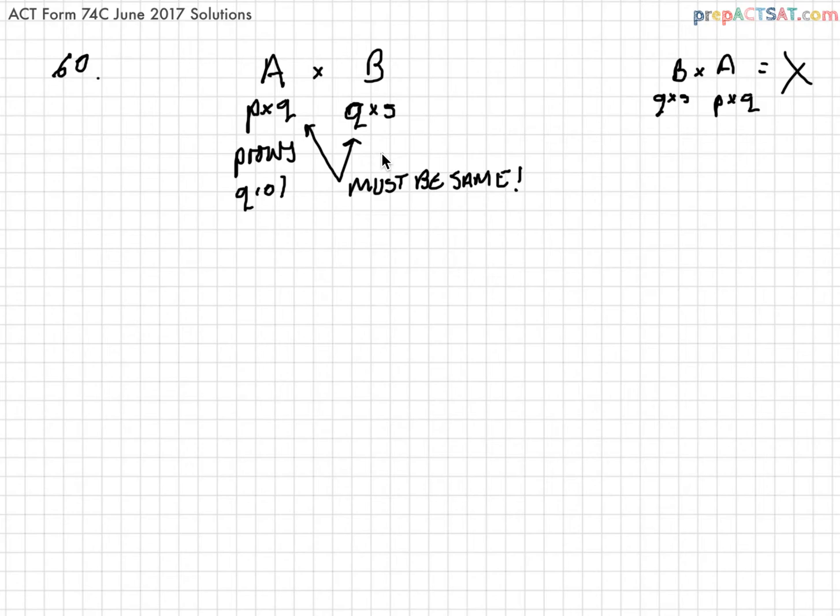We call that the commutative property. I'm telling you this because that has come up on the ACT before, so if you do an operation in a different order, it's called the commutative property. So we say that matrix multiplication is not commutative.